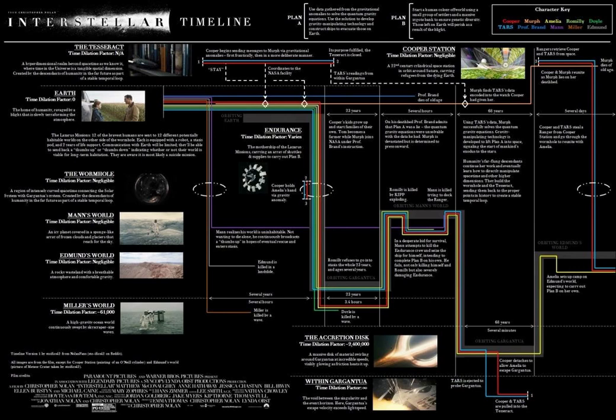In the corner you can see the color key for the timelines: red means Cooper, orange means Murph, yellow means Amelia, light green means Romilly, dark green means Doyle, baby blue means TARS, dark blue means Professor Brand, purple means Mann, and dark orange or brown means Miller, then gray means Edmund.